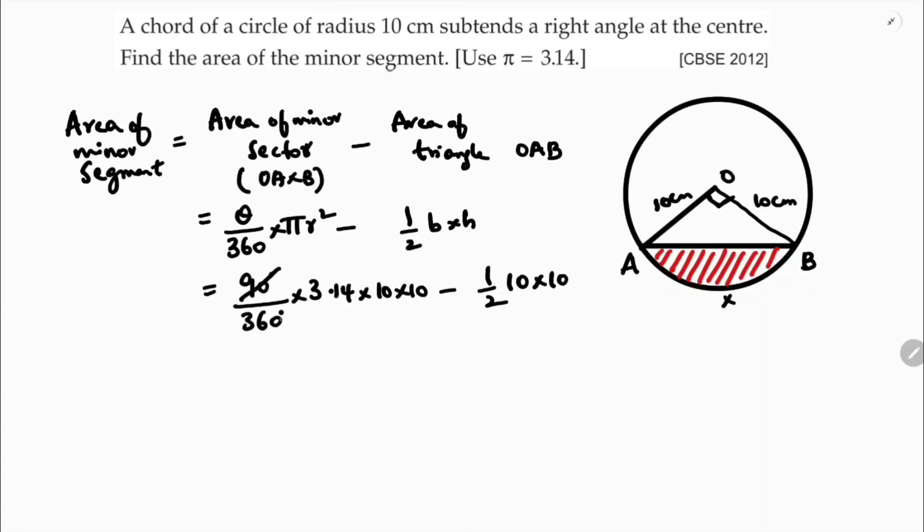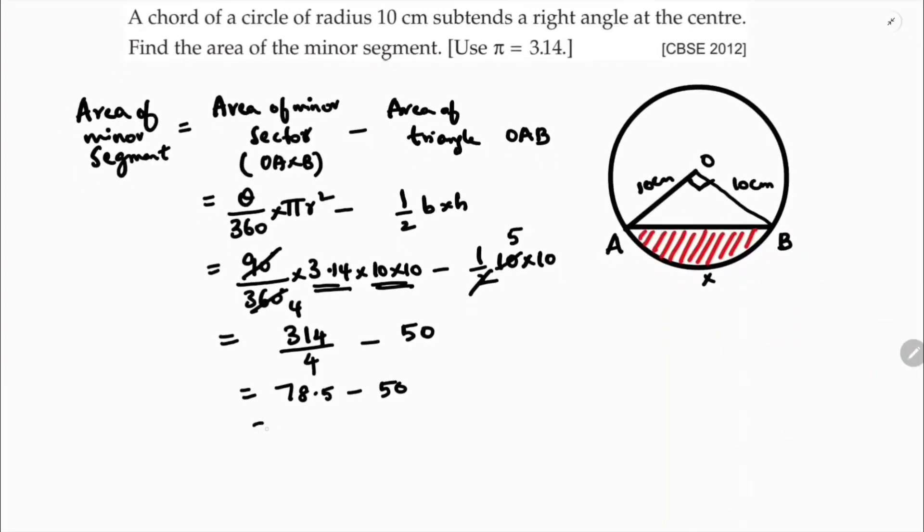So 90 times 4, so 3.14 into 100 is 314, 314 by 4 minus 2 times 5, so 5 times 10 is 50. So 314 divided by 4 is 78.5 minus 50, so the answer is 28.5 cm square. Area of minor segment is 28.5 cm square.